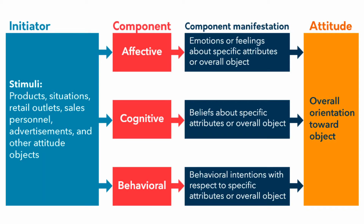Most of our attitudes or opinions are going to be easily accessible and something that we can explicitly state. But we also have something called implicit biases — things that we might not be able to explicitly state, or might not even know that we have. We might not even be aware that we have this kind of bias.